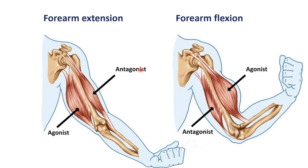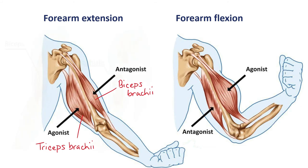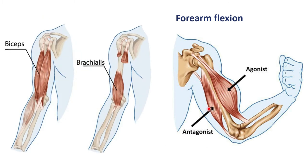We can classify muscles based on how their actions relate to each other. The agonist is a muscle that contracts to produce a particular movement — for example, the triceps brachii is an agonist that causes forearm extension. An antagonist is a muscle whose actions oppose those of the agonist; in this case, the biceps brachii is the antagonist. If we consider forearm flexion instead, the roles reverse. A synergist is a muscle that assists the agonist — for example, both the biceps brachii and the brachialis work synergistically to flex the forearm.